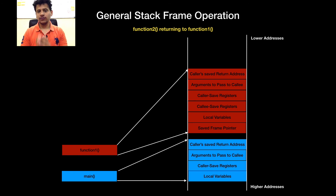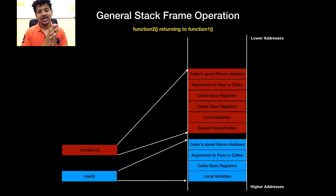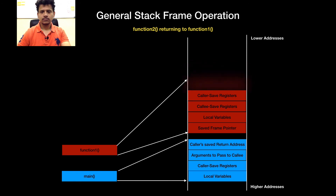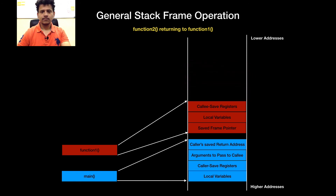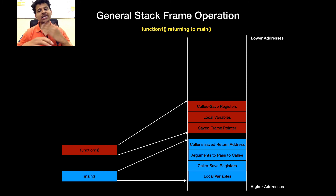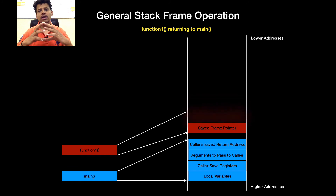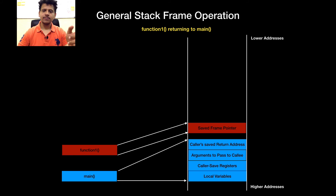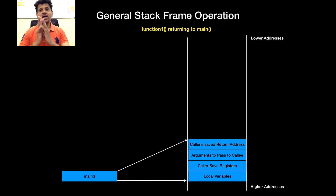Now we are executing from function 1. As we saw earlier, when function 1 was calling function 2, it pushed caller-save registers, arguments, and the caller-save return address onto the stack. In that case, function 1 was the caller, and because of that, function 1 is responsible for cleaning its own stack. Now function 1 is returning to main, so it will clean its local variables and callee-save registers. The saved frame pointer will be put into EBP, and using the caller-save return address, we are returning to main.